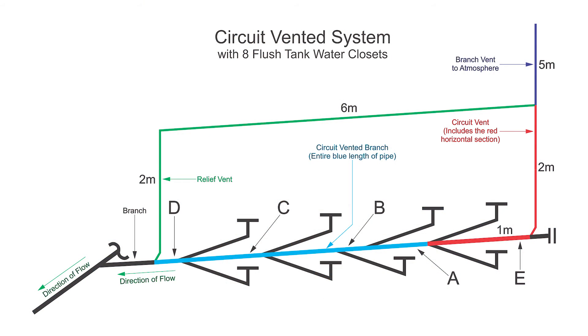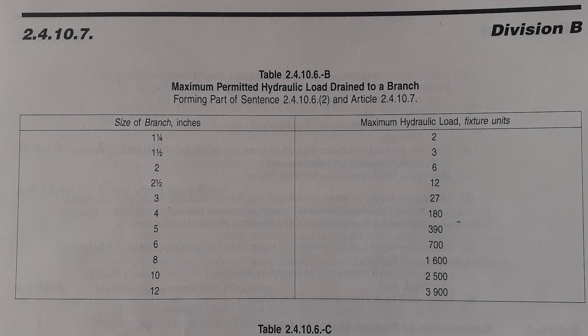Back in our plumbing code, clause 2-5-3-1 part 9 talks about how we size the circuit vented branch, and we just use our branch tables for that, which is table 2-4-10-6 B.